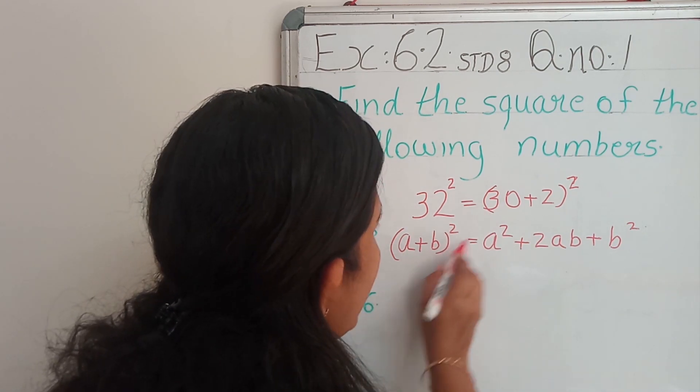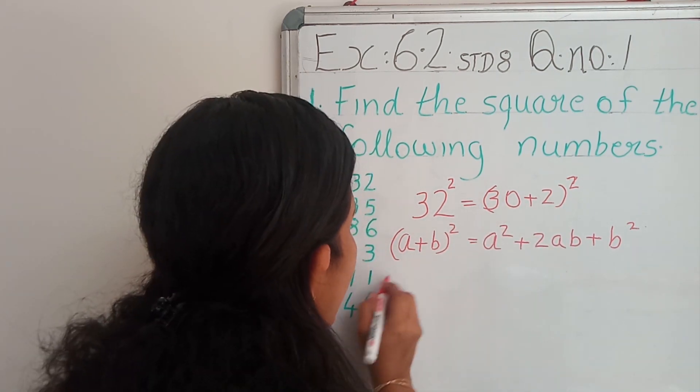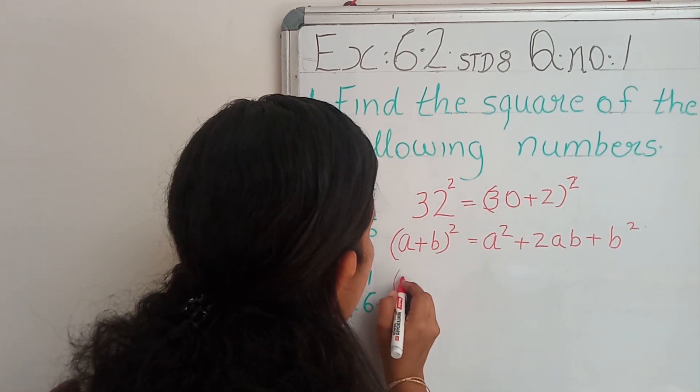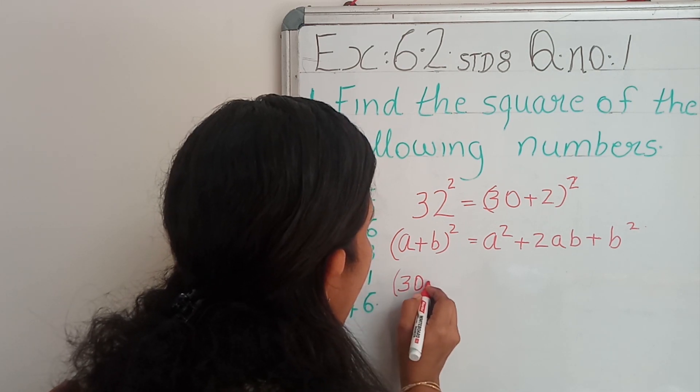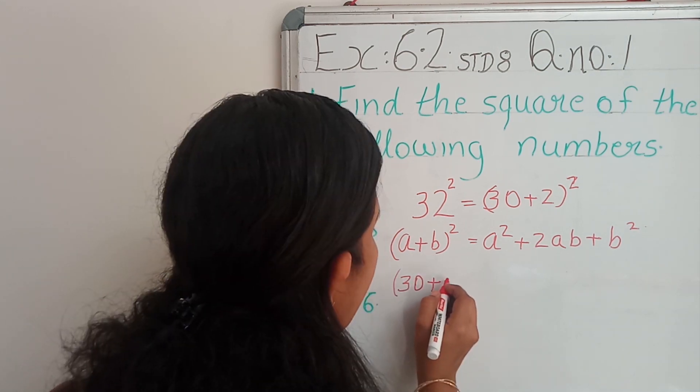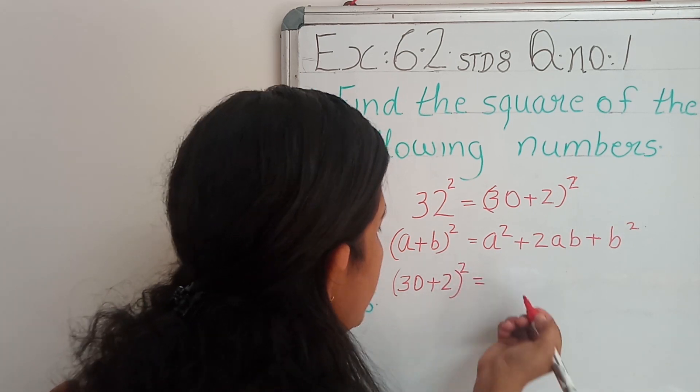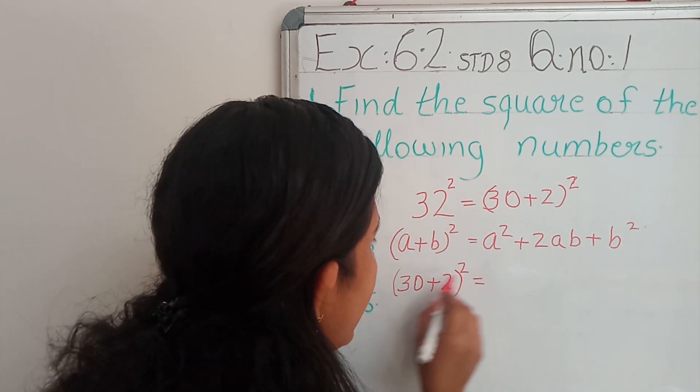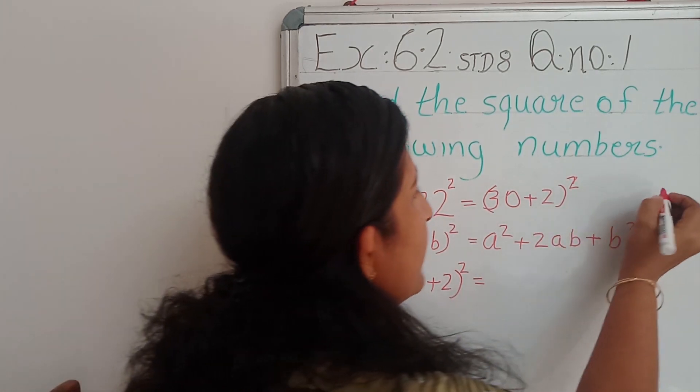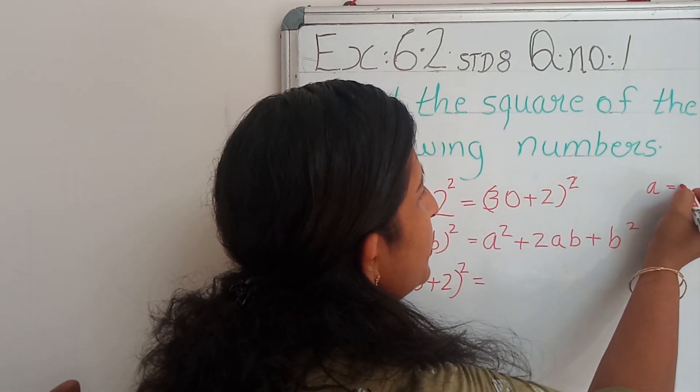In the same way, A plus B, 30 plus 2. Instead of A, we can take 30. And instead of B, I can take 2. So, 30 plus 2 the whole square equal to, just like this. What is the value of A? A equal to 30. B equal to 2.